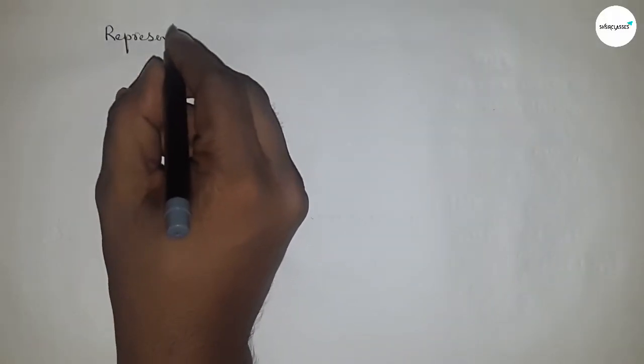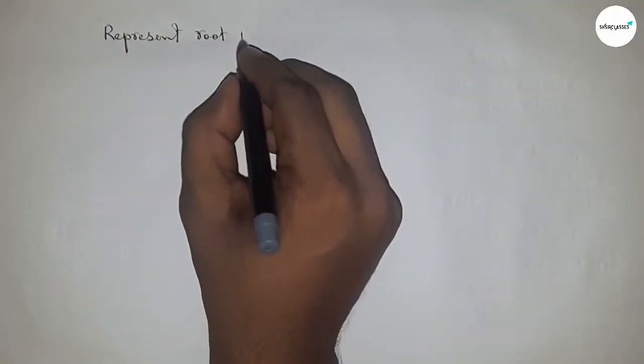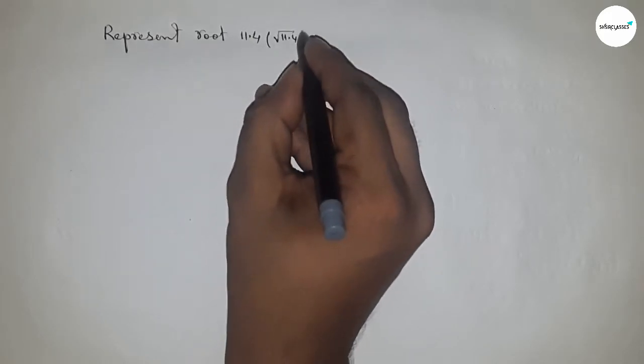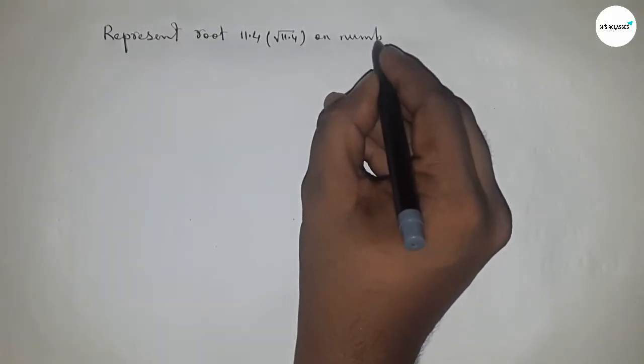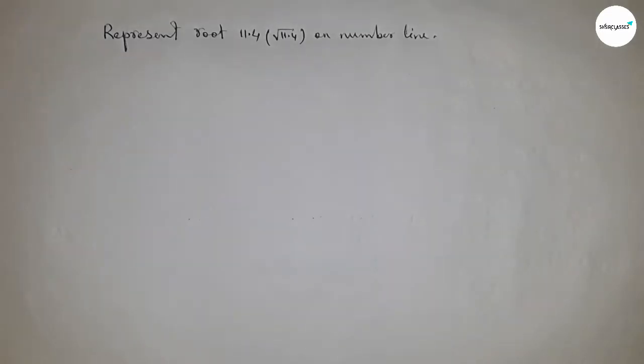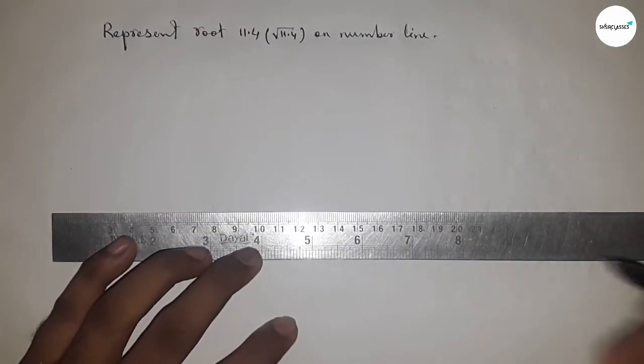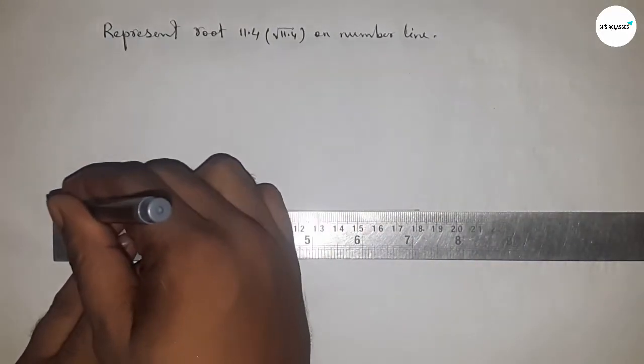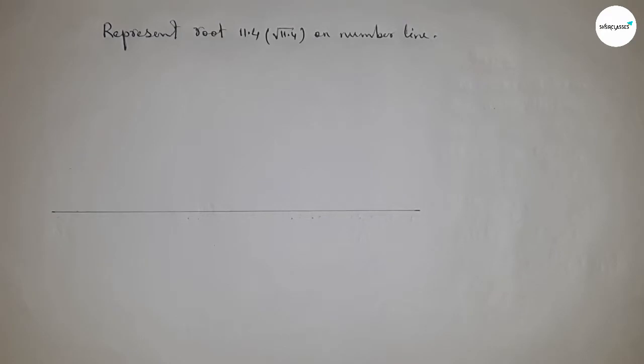Hi everyone, welcome to Accessory Classes. Today, how to represent √11.4 on number line. In this video, we'll be representing √11.4 on number line. Let's start. First of all, draw a line of any length, and this is AX line.